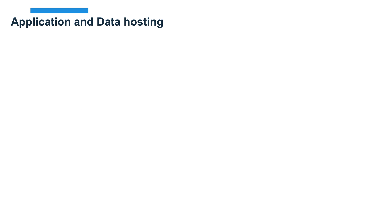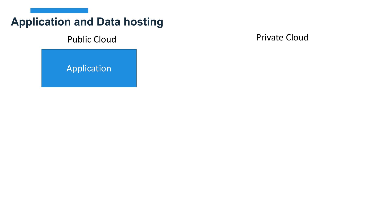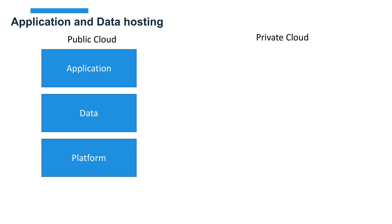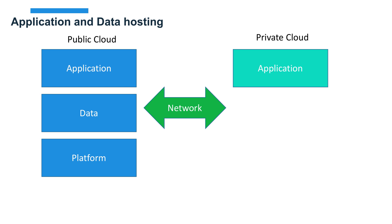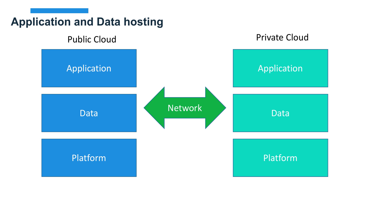The application and data hosting stack includes the application itself — the program that runs in memory — the data or database, which could be raw storage, a relational database, or an object database, and the platform, meaning the underlying operating system where data is stored and the application is running, such as Linux or Windows NT. The public and private cloud are connected by a network, and the private cloud has the same components: application, data, and platform — they are analogs of each other.